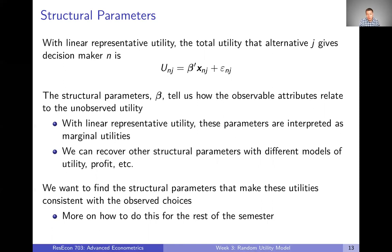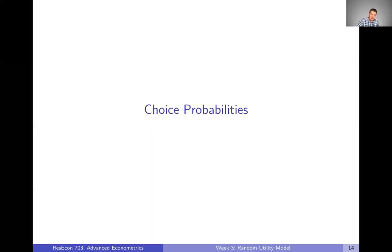We can get different kinds of structural parameters with different models of utility or profit. In this class, a lot of what we're going to talk about will ultimately be marginal utilities, and then we'll see what we can do once we know those marginal utilities. Ultimately, what we want to do is find the structural parameters that make these utilities consistent with our observed choices. That's a broad statement and we'll talk a lot about how exactly we'll do that for the rest of the semester. We're going to dig a level deeper and talk about choice probabilities in the next video, which are a really important aspect to understanding and estimating these kinds of models.